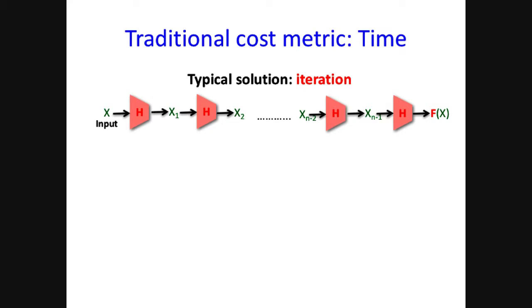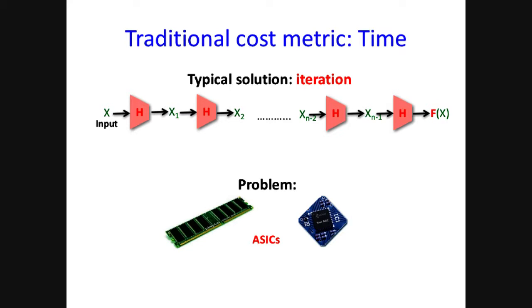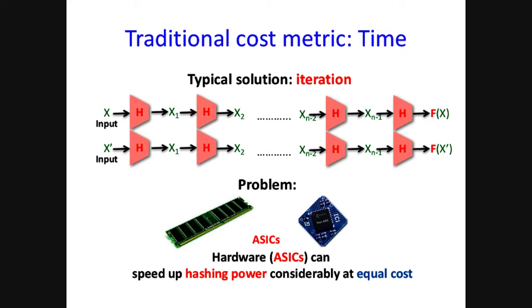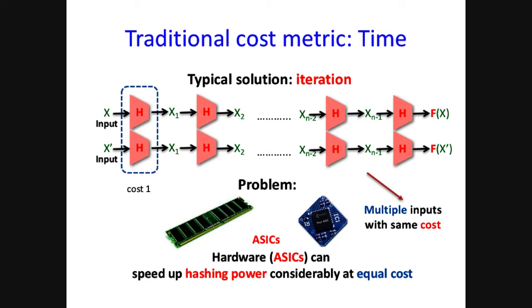Traditionally, time complexity is considered, measuring cost by the running time of computation. In practice, the solution is to use an iteration scheme where we compute N random string labels iteratively and output the last label. But this scheme has a problem: through hardware optimization, we can use application-specific integrated circuits (ASICs) to speed up hashing power considerably at equal time cost. So now the adversary using ASICs can compute multiple inputs with the same time cost, and the scheme is no longer safe against brute-force attacks.